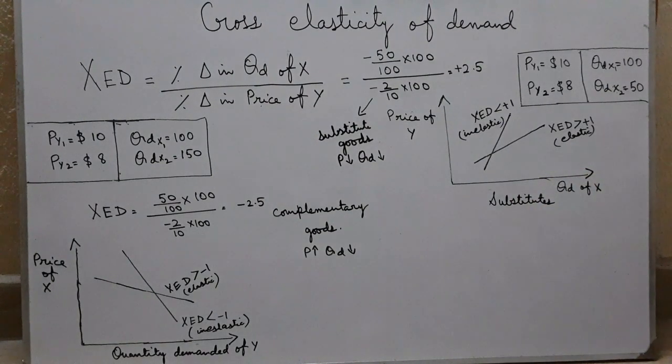Now, how is this concept helpful for businesses? Businesses of substitute goods always see what their competitors are doing. So if the price of one substitute goes up, the producers of the other substitutes would keep their prices the same or they would not increase in the same way so that they can grab customers in the market.